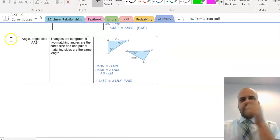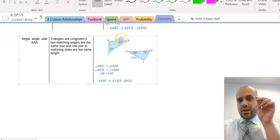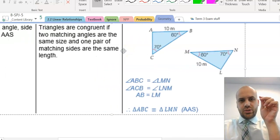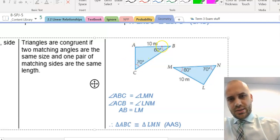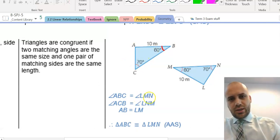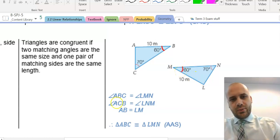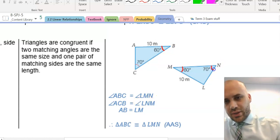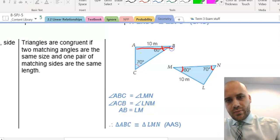All right. Now, the AAS rule says that if you know two angles and one side are congruent, that's going to be enough information. So, we zoom in on our question. We can see we can match up angle ABC, the 60-degree angle, with angle LMN, the 60-degree angle. We can match up angle ACB with angle LNM, 70-degree, 70-degree.